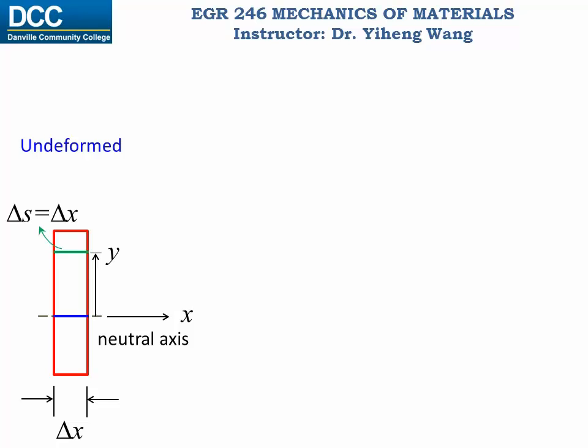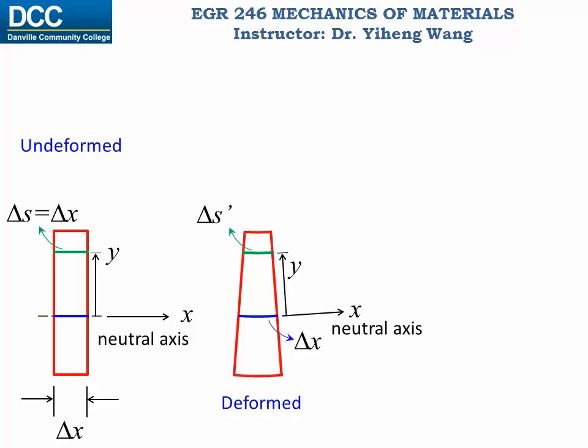After we apply the external moments, the beam curves up, and the small segment becomes this. Since the blue curve is on the neutral axis, its length remains the same, still delta x. But the length of this green curve is now changed to delta s prime, which no longer equals delta x.